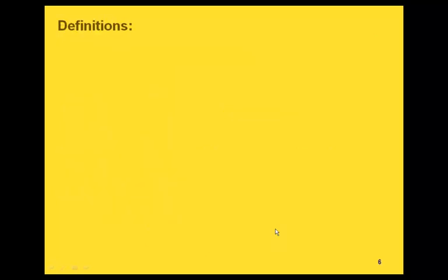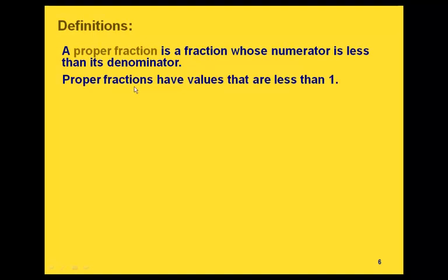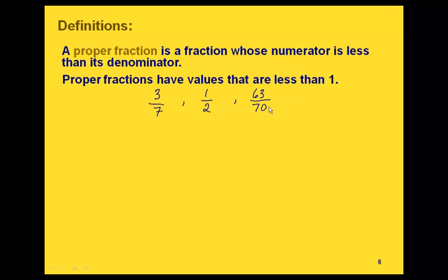A few definitions. A proper fraction is a fraction where the numerator is less than the denominator, and proper fractions have values less than 1. Some examples: 3 sevenths, because the numerator 3 is less than the denominator 7; 1 half, where the numerator 1 is less than the denominator 2; and 63 over 70, because 63 is less than 70.